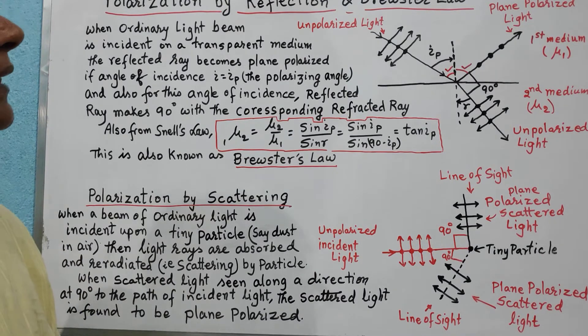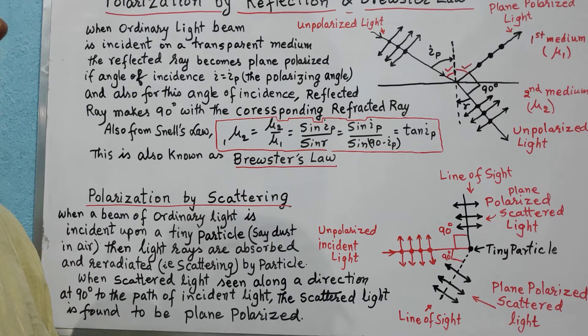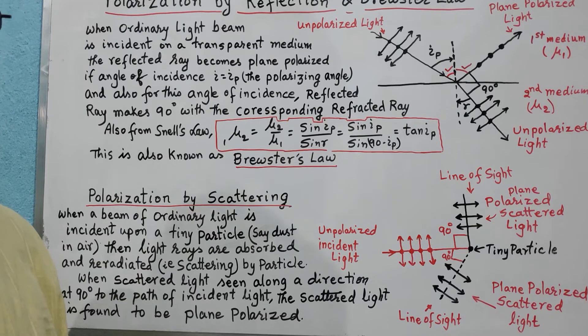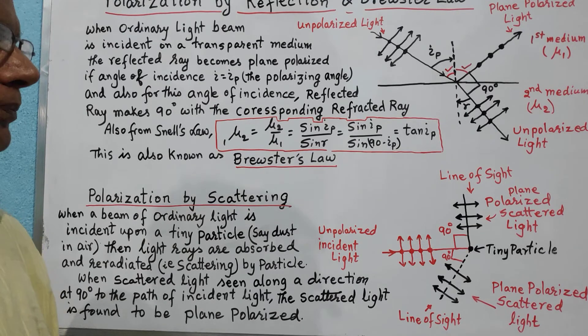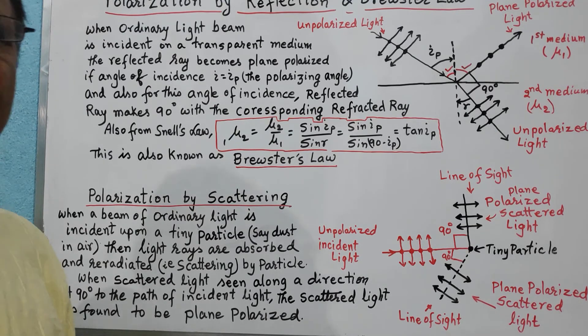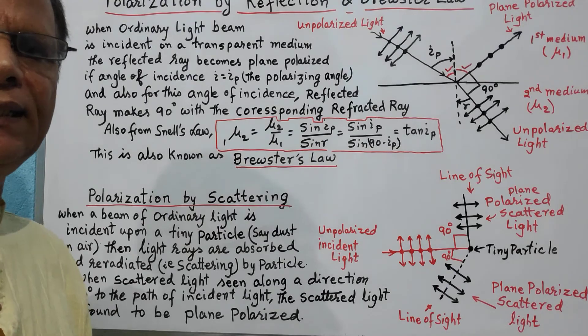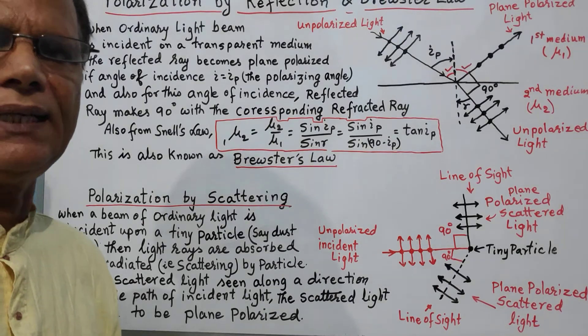By these two phenomena — reflection and scattering — we have plane polarized light produced in nature. That's all for today. Thank you and have a nice day.